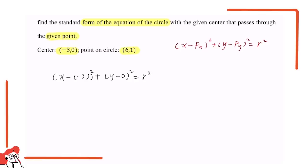And we know the given point is (6, 1), so we can put (6, 1) into this equation. So we can get (6 minus (-3)), which is 9, squared, plus 1 squared equals r squared. So we can note r squared is 82.